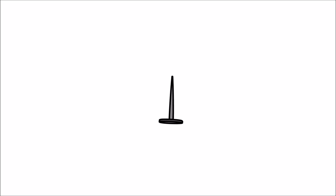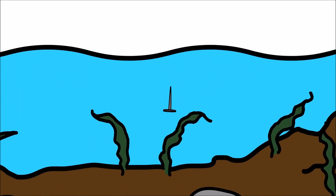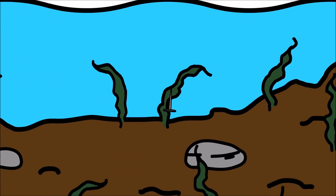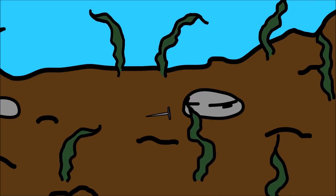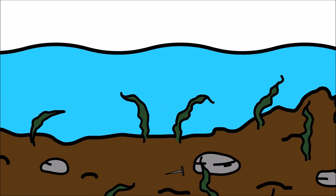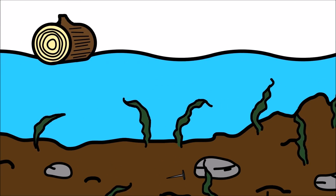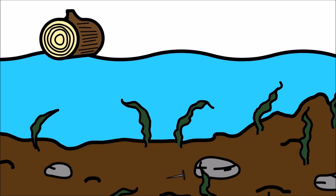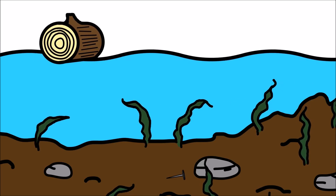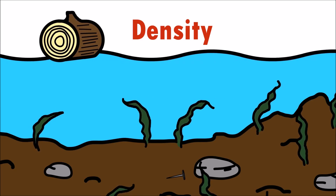For example, a small iron nail will sink. But a large log will float! One of the reasons why objects sink or float depends on density!